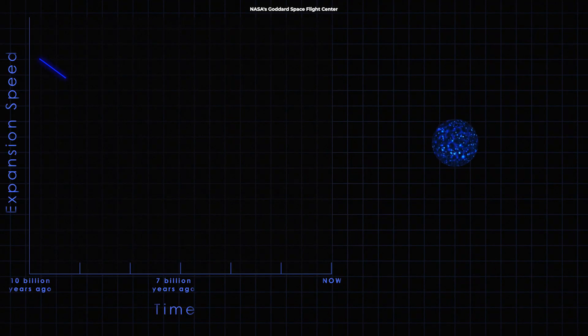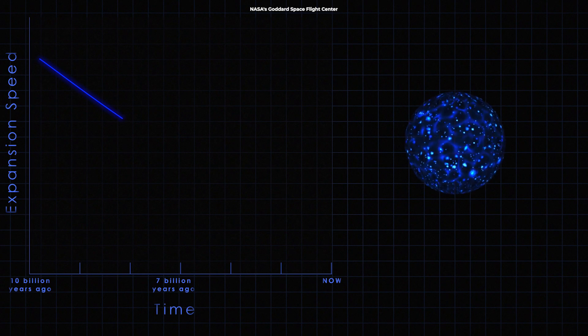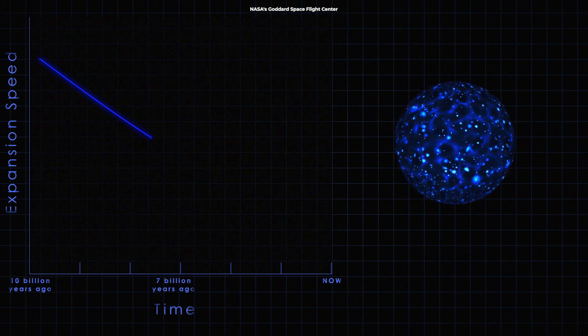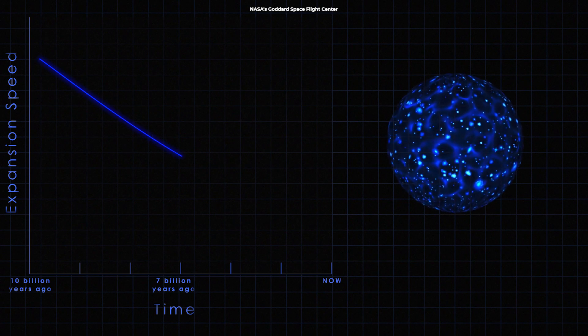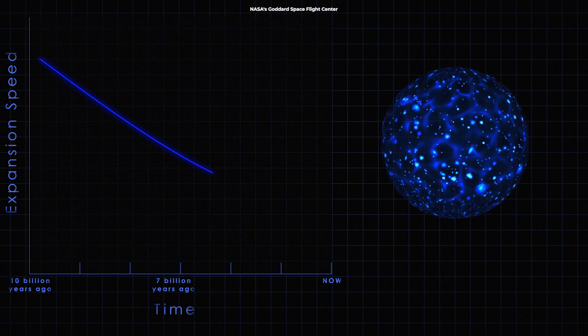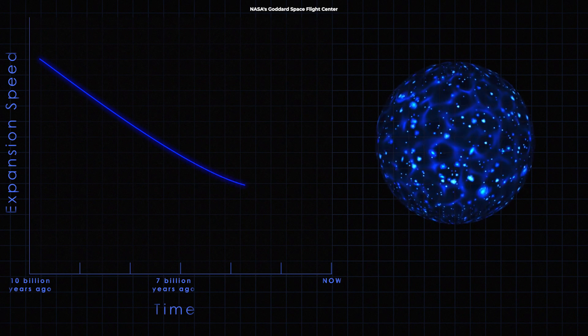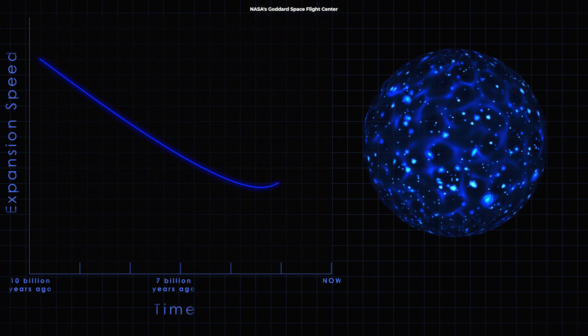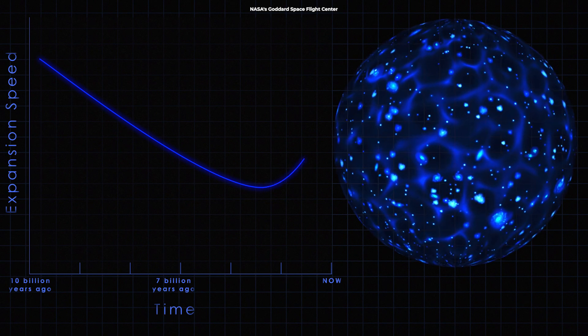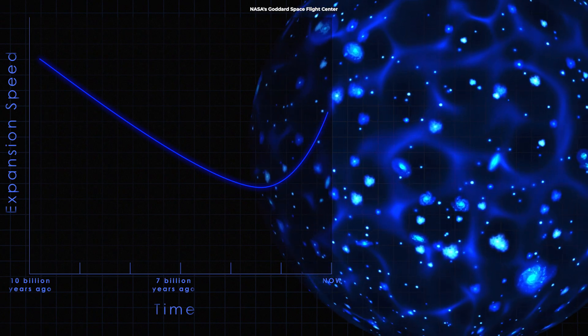However, when the accelerating expansion of the universe was discovered, the cosmological constant was resurrected as a possible explanation for dark energy. In this model, the cosmological constant is thought to be a constant energy density that fills space uniformly and is responsible for the acceleration of the universe's expansion.